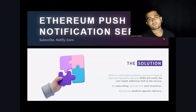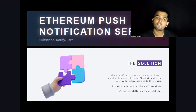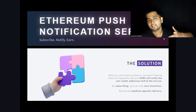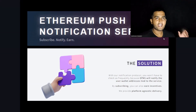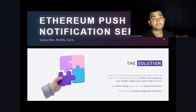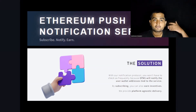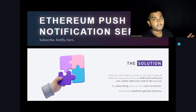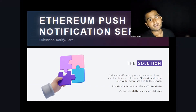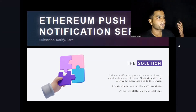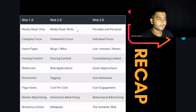EPNS is the native Web3 communication protocol. It has a native governance token called the PUSH token. If you want to back a project in the Web3 ecosystem, you can purchase their tokens and become an owner — not in equity, but in the form of community ownership. One of the best things about the EPNS project is that it is 53% owned by the community. This is the beauty of Web3.